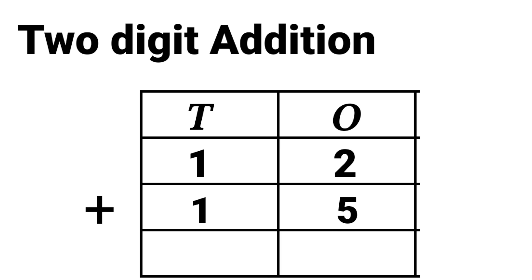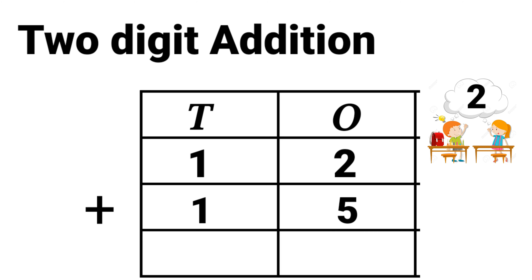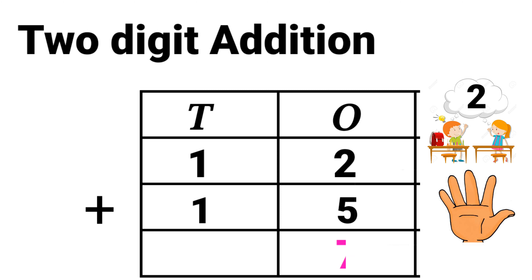2 plus 5. 2 in the mind and 5 in the fingers. 2 after 3, 4, 5, 6, 7. So the answer is 2 plus 5 equals 7.